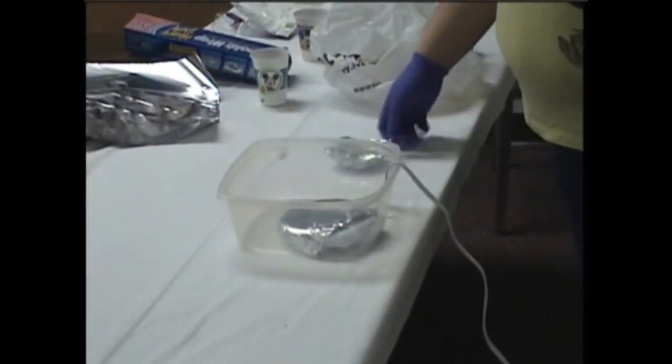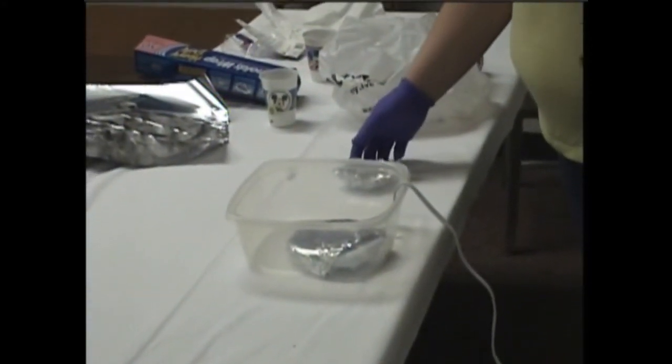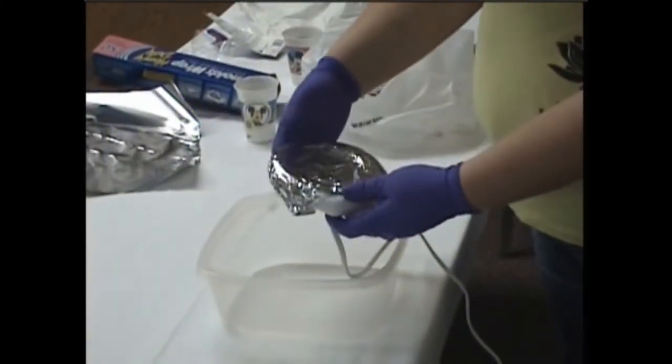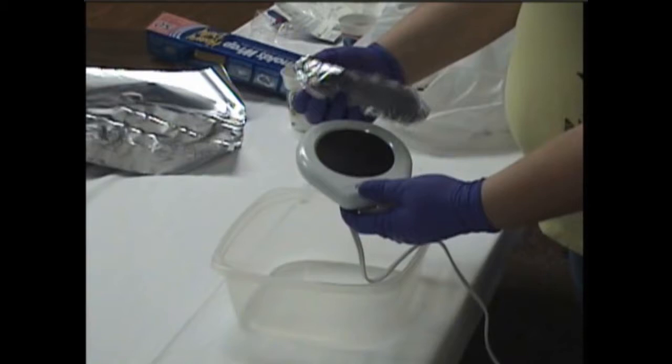To demonstrate how to develop fingerprints using superglue fuming technique, the first thing that we had to put in here was a low-level heat source. This is a candle warmer.